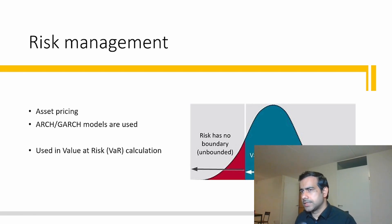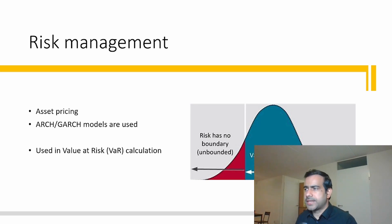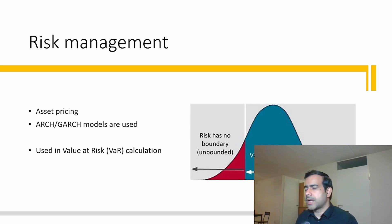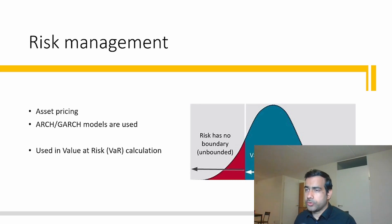ARCH and GARCH models are very popular for volatility forecasting in risk management. In asset pricing, these volatility models are primarily used because you need to know the volatility (sigma), and ARCH and GARCH are the go-to models for that.